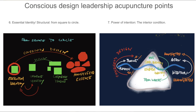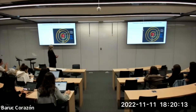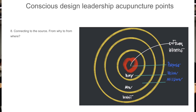Sixth: the essential identity and the structural identity — are we operating from a structural identity or from an essential identity? Seventh: power of intention — intention is what is not visible, but what is showing in the product that we are doing. Eighth: connecting to the source — from the why we do that, to the from where we do that.